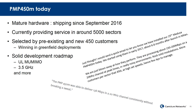The PMP450M has been shipping for just under two years and is currently providing service in around 5,000 sectors. It has been selected for sector upgrades as well as Greenfield PMP450 deployments. There is a solid development roadmap behind the 450M. It was originally released supporting up to 20 MHz channel bandwidths; subsequently, support for 30 and 40 MHz channels was added. In the next few months, we will add Uplink MU-MIMO and deliver a 3.5 GHz version.